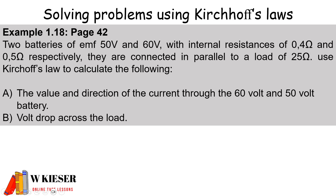In this calculation we'll be solving problems using Kirchhoff's law. It's a question taken from an example in our textbook. Two batteries of EMF 50 volts and 60 volts with internal resistances of 0.4 ohms and 0.5 ohms respectively are connected in parallel to a load of 25 ohms. Use Kirchhoff's law to calculate the value and direction of the current through the 60 volt and 50 volt battery.